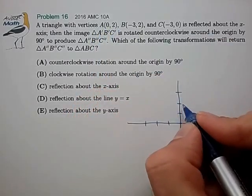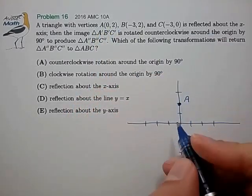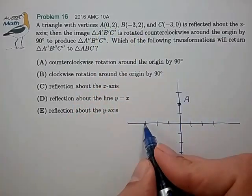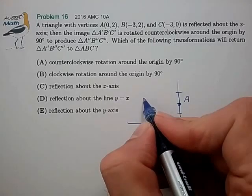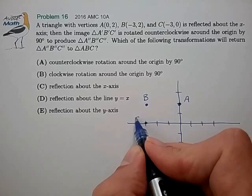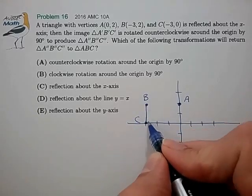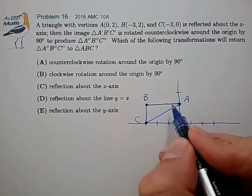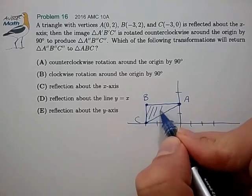Let's see if we can track how this triangle is being transformed. So we have A at (0,2), we have B at (-3,2), and we have C at (-3,0). So that's our original triangle. Try to visualize that as best we can.